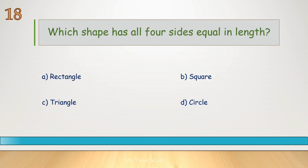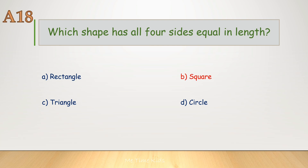Which shape has all four sides equal in length? Correct answer is B, square.